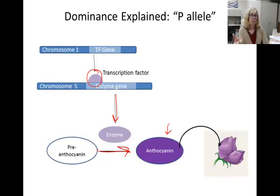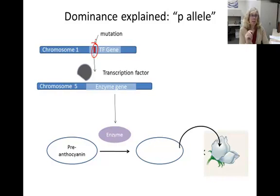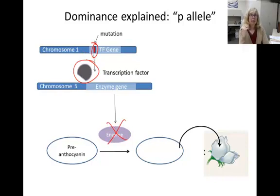The flower can then fill up with this purple pigment, and the flower looks purple. But if there's a single point mutation in the transcription factor gene — the so-called little p allele — then the protein that's made has the wrong amino acid, folds incorrectly, and is nonfunctional. Without the transcription factor, the enzyme gene will not turn on, so no enzyme will be made. And without the enzyme, no anthocyanin will be made, and without any anthocyanin, the flower is white.